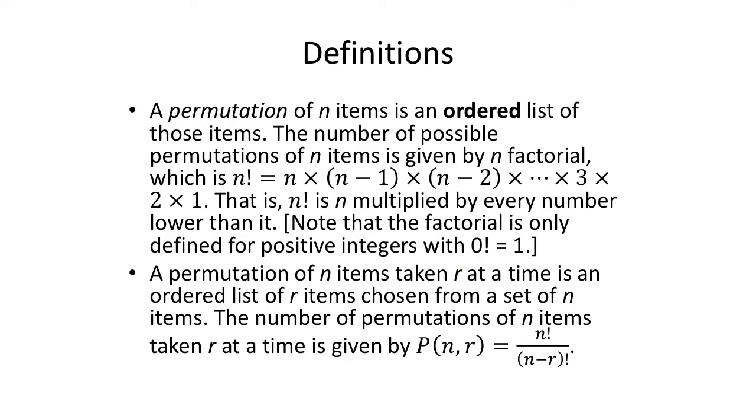Note that factorial is only defined for positive integers and we take 0 factorial to equal 1. If you want a proof of that, come see me in my office hours or send me an email. In this video, we're going to assume that's true. A permutation of n items taken r at a time is an ordered list of r items chosen from a set of n items. The number of permutation of n items taken r at a time is given by this formula: P(n,r) equals n factorial over (n minus r) factorial.